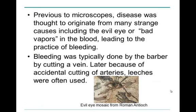Before microscopes, disease was thought to originate from many different causes, some of them very strange — things such as the evil eye, which you can see in this photograph of a mosaic from the Roman city of Antioch, or things such as bad vapors in the blood. The belief in bad vapors led to the practice of bleeding, typically done by the barber by cutting a vein. Sometimes barbers weren't precise and would cut arteries, leading to severe blood loss.